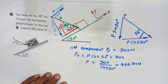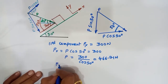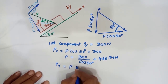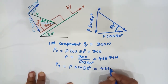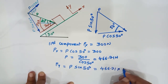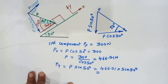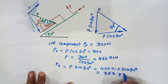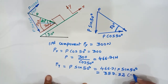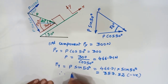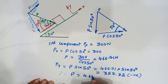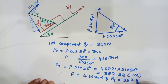Now finding the perpendicular component: Py equals P sin 50 degrees, which equals 466.71 times sin 50 degrees, giving 357.52 newtons. Since it is directed downward into the incline, it is negative. Therefore, P equals 466.71 newtons and Py equals 357.52 newtons.